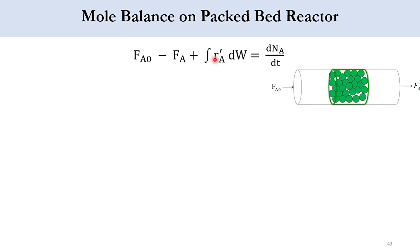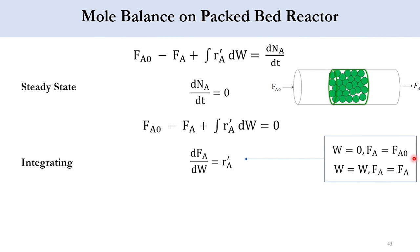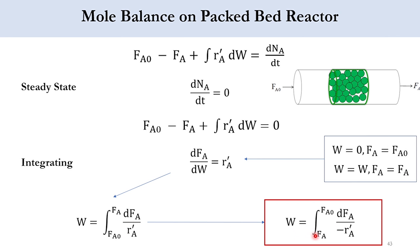Using the same approach but replacing RA by RA' and V by W, the mole balance gives FA0 minus FA plus the integral of RA' dW equals zero. This transforms to dFA over dW equals RA'. Integrating with limits — W equals zero, FA equals FA0; W equals W, FA equals FA — and switching limits and applying the negative sign, we get W equals the integral from FA to FA0 of dFA over minus RA'. Remember that RA' applies only to the packed bed reactor with catalyst, not to volumetric reactors.